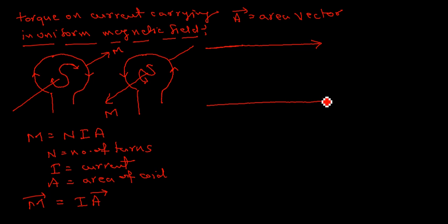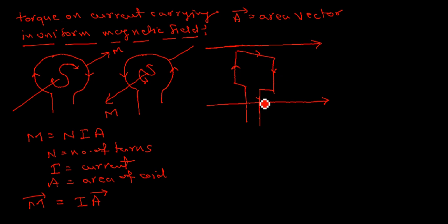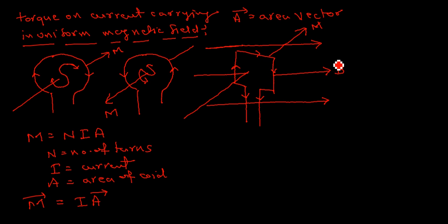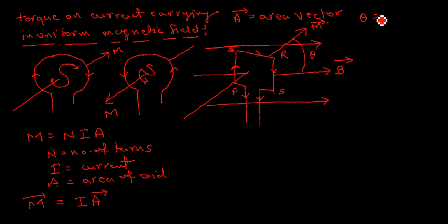This is the magnetic field B. The current in the coil is clockwise. The direction of the magnetic moment M is as shown. If the coil is named PQRS, the angle between M and B is theta. So we have theta as the angle between M and B.